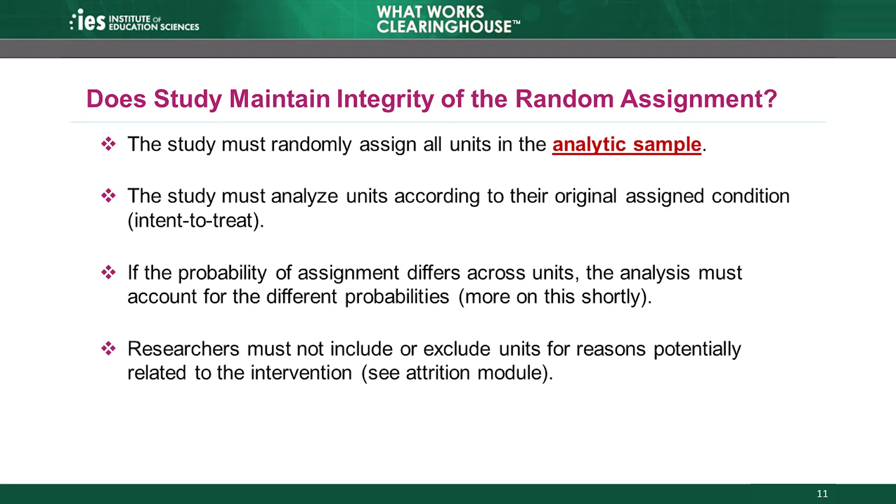As another example, a student assigned to a school in the comparison group might move during the school year and end up in an intervention group school. The study must still analyze the student according to his assigned condition in the comparison group, even though he received the intervention. A student assigned to the comparison condition who ends up receiving the intervention doesn't compromise random assignment so long as the study analyzes the student according to his or her originally assigned condition. An analysis based on assigned conditions is called an intent-to-treat analysis, and these intent-to-treat analyses preserve the integrity of the random assignment.